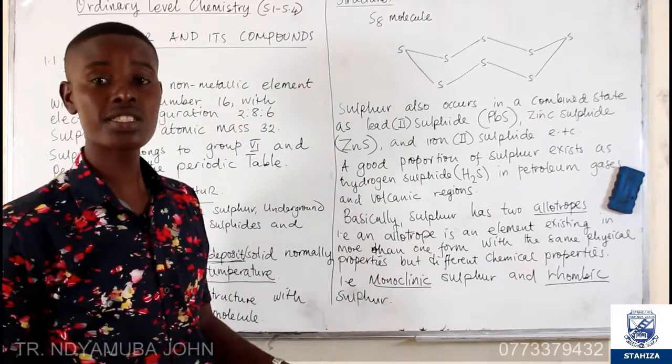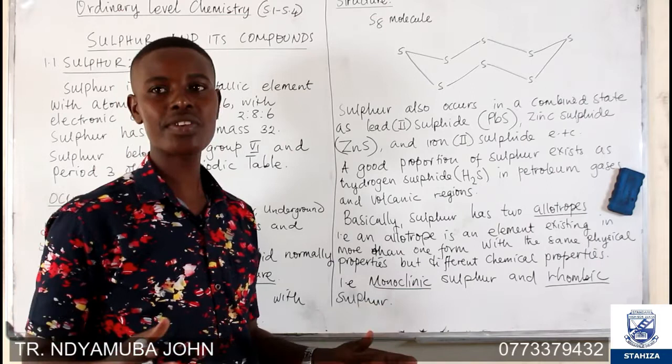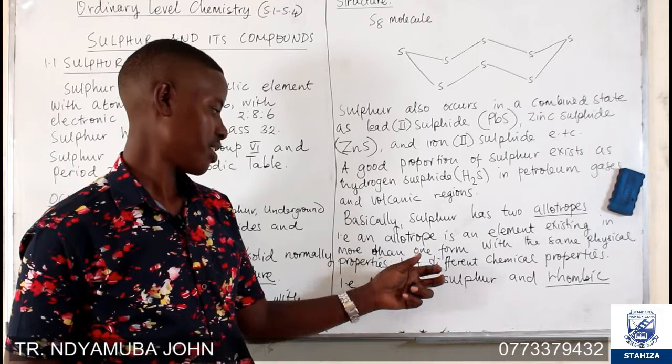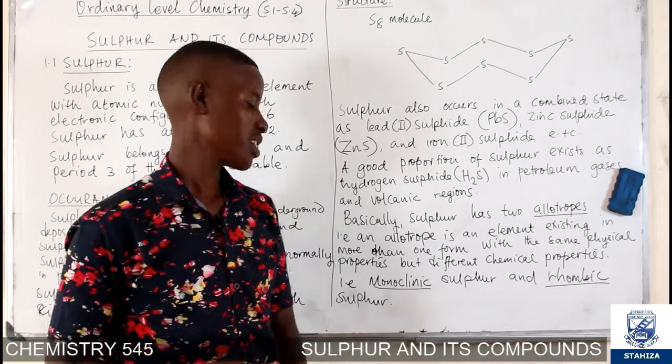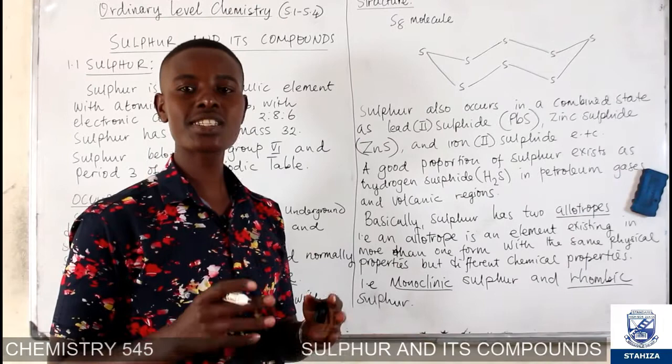In some other textbooks you will find people talking about plastic sulfur or amorphous sulfur, but the major allotropes of sulfur we need to know are monoclinic and rhombic sulfur, which we are going to discuss in detail.